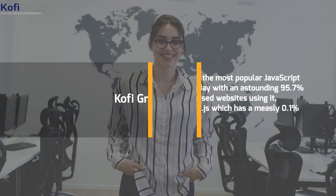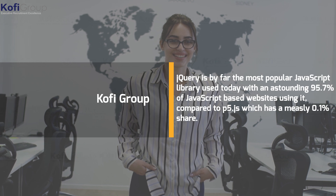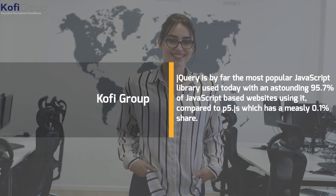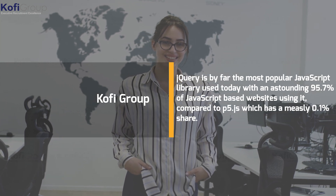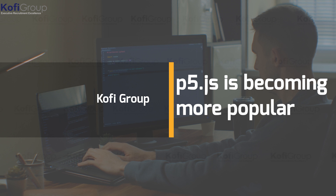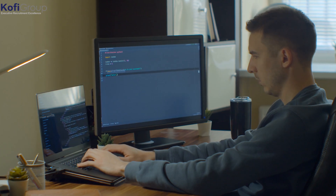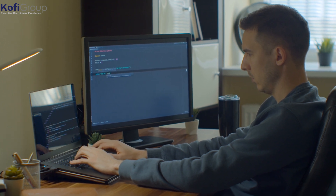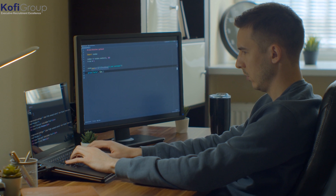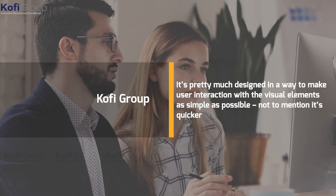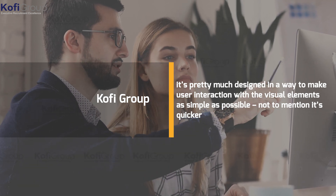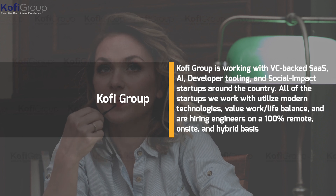Number three: why p5.js is popular. The numbers don't lie — jQuery is by far the most popular JavaScript library used today, with an astounding 95.7% of JavaScript-based websites using it, compared to p5.js which has a measly 0.1% share. There's a reason for this though: jQuery is a general-purpose library and, although extensive, it really can't do animation nearly as well as a specialist framework like p5.js. p5.js is becoming more popular because it caters for the beginner and veteran equally well, can create amazing visuals, and is designed to make user interaction with visual elements as simple as possible — not to mention it's quicker.